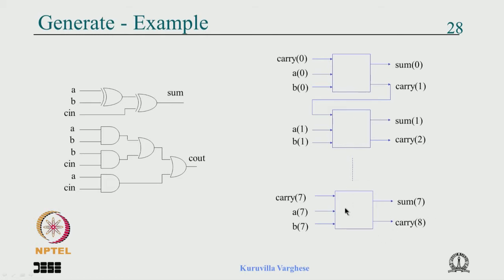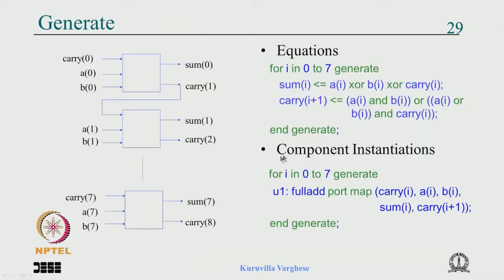You can write the equation in a generate loop: for i in 0 to 7 generate, sum(i) = a(i) XOR b(i) XOR carry(i), and carry(i+1) = a(i)b(i) OR a(i)c(i) OR b(i)c(i). In the 0th loop these carry inputs are 0, you get carry1 as output, and in the next iteration carry1 is the input — naturally forming the ripple structure.